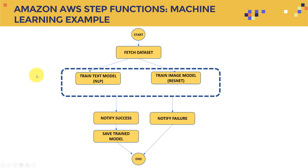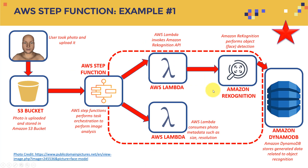For example, you could use Amazon Comprehend as a high-level service to train the text model. Then you get feedback: if there is failure, you're done; if there is success, you save the trained model and end. You can add additional steps to make inference based on that trained model, but that gives you the idea of the step function.